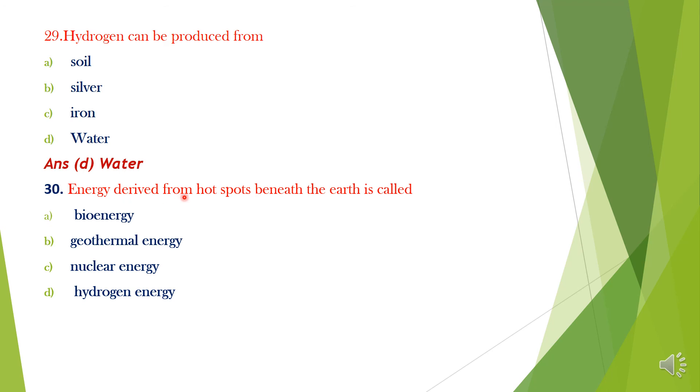Question 30. Energy derived from hot spots beneath the earth is called: A. Bioenergy, B. Geothermal energy, C. Nuclear energy, D. Hydrogen energy. Answer is option B, Geothermal energy.